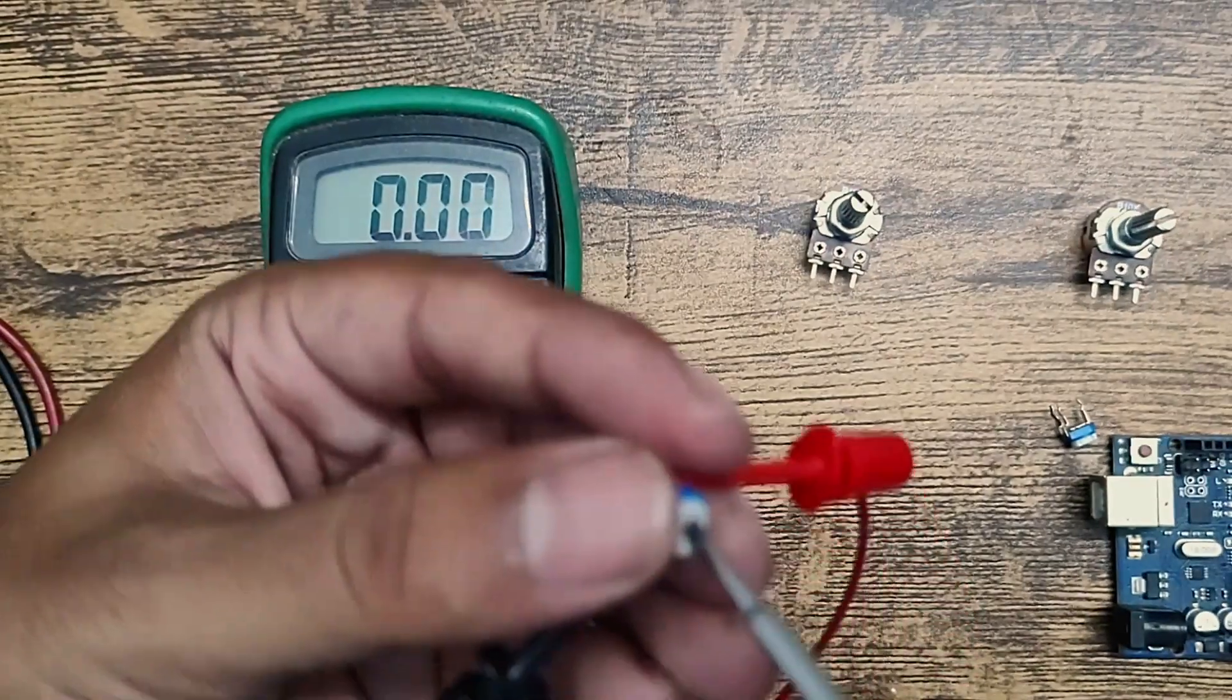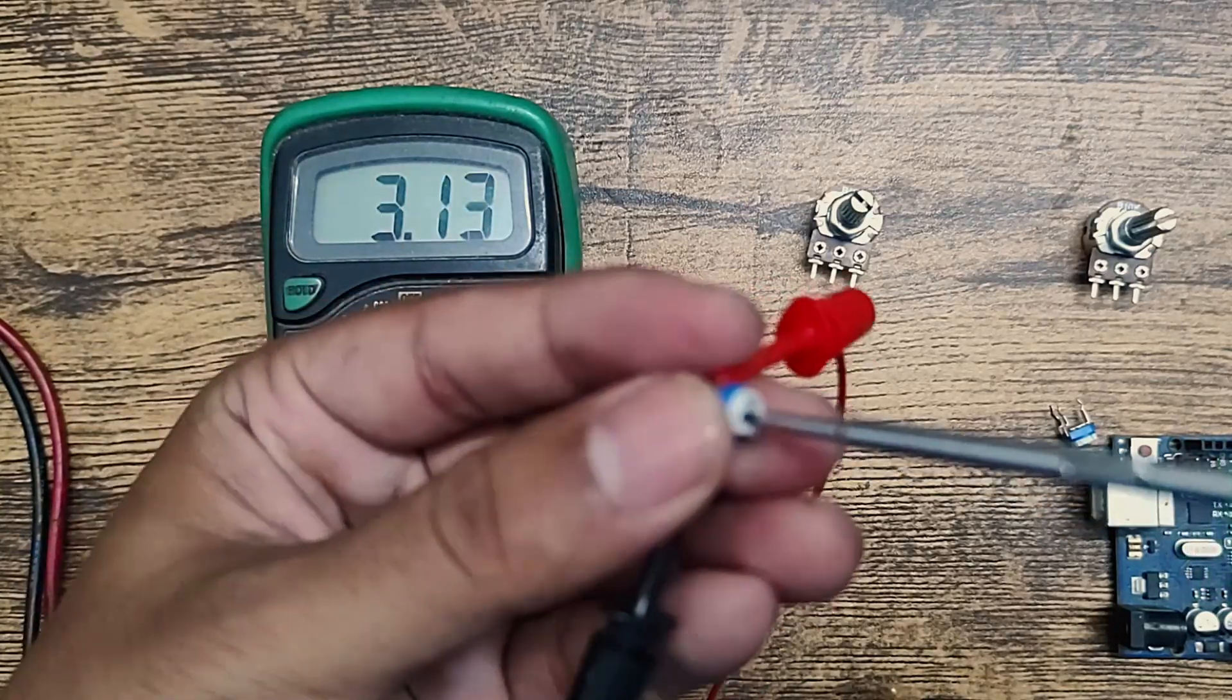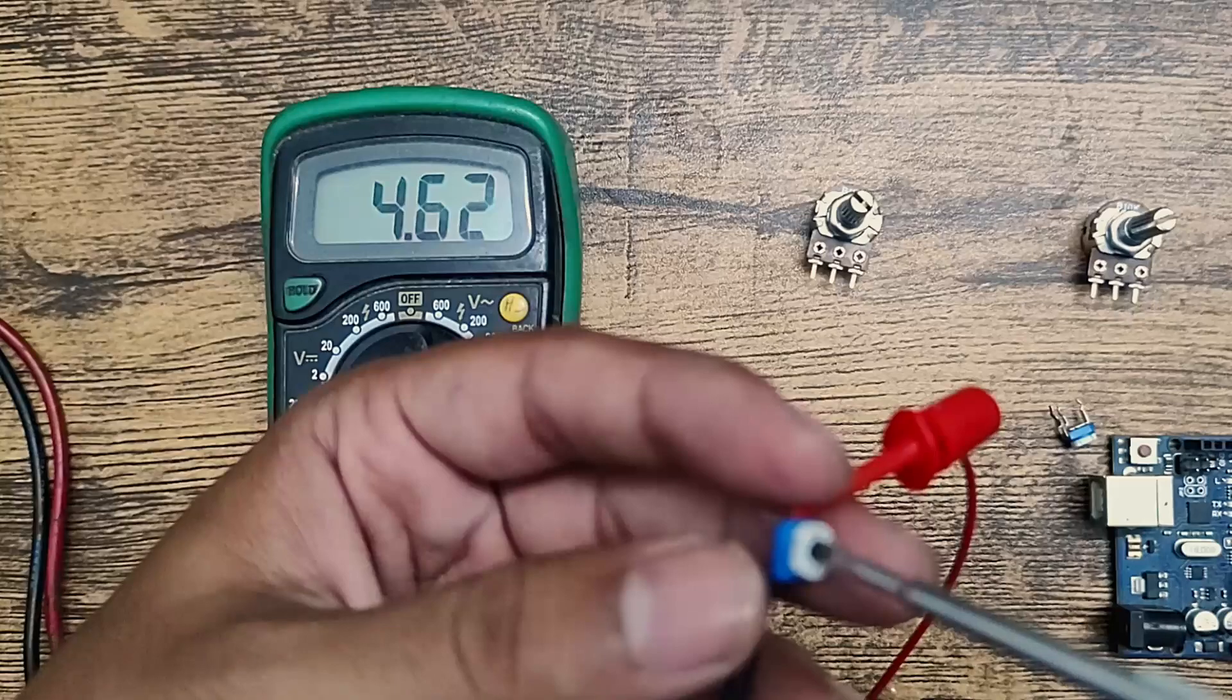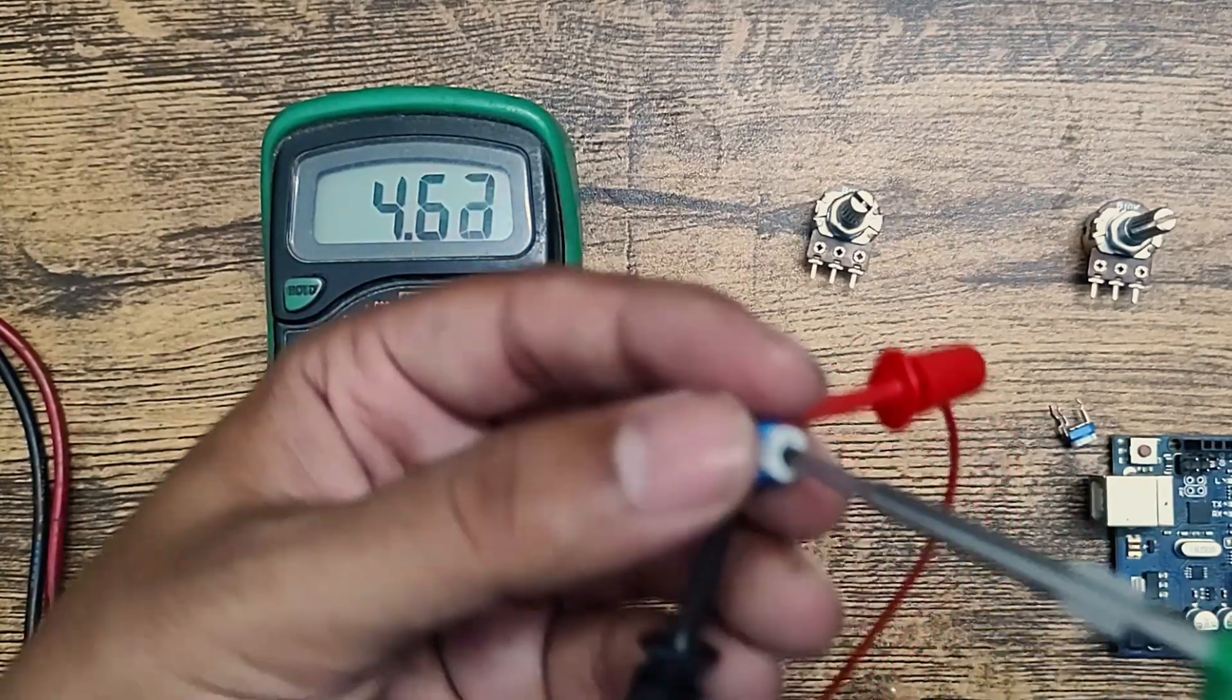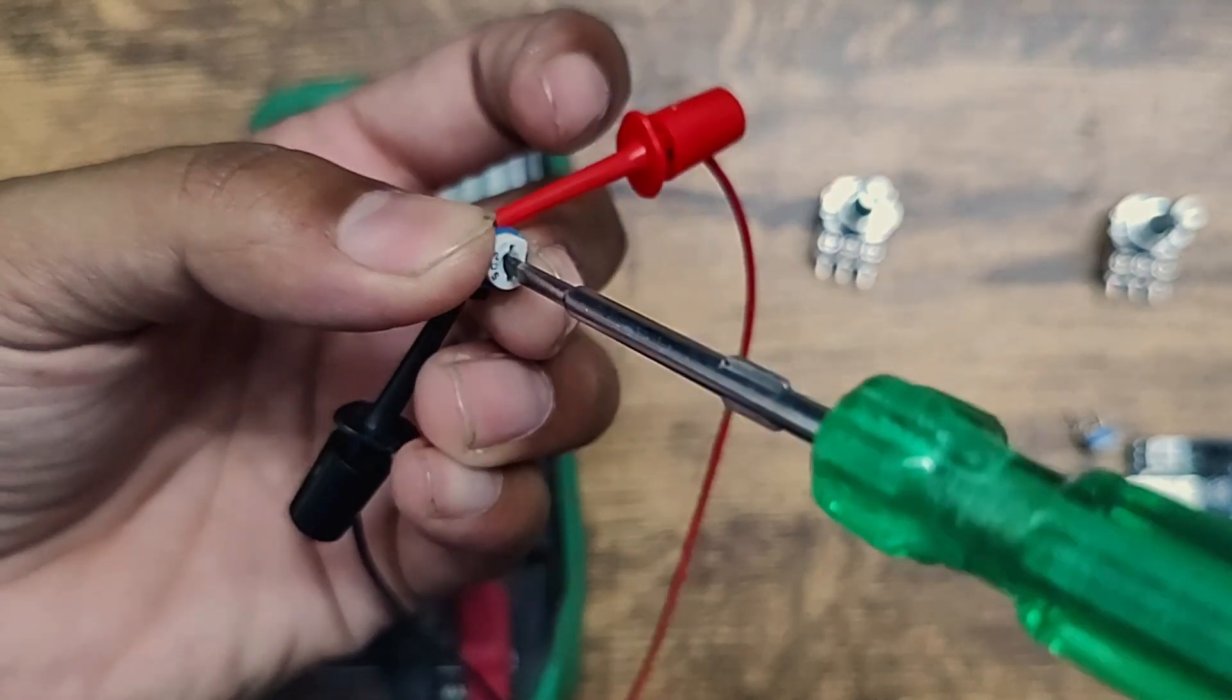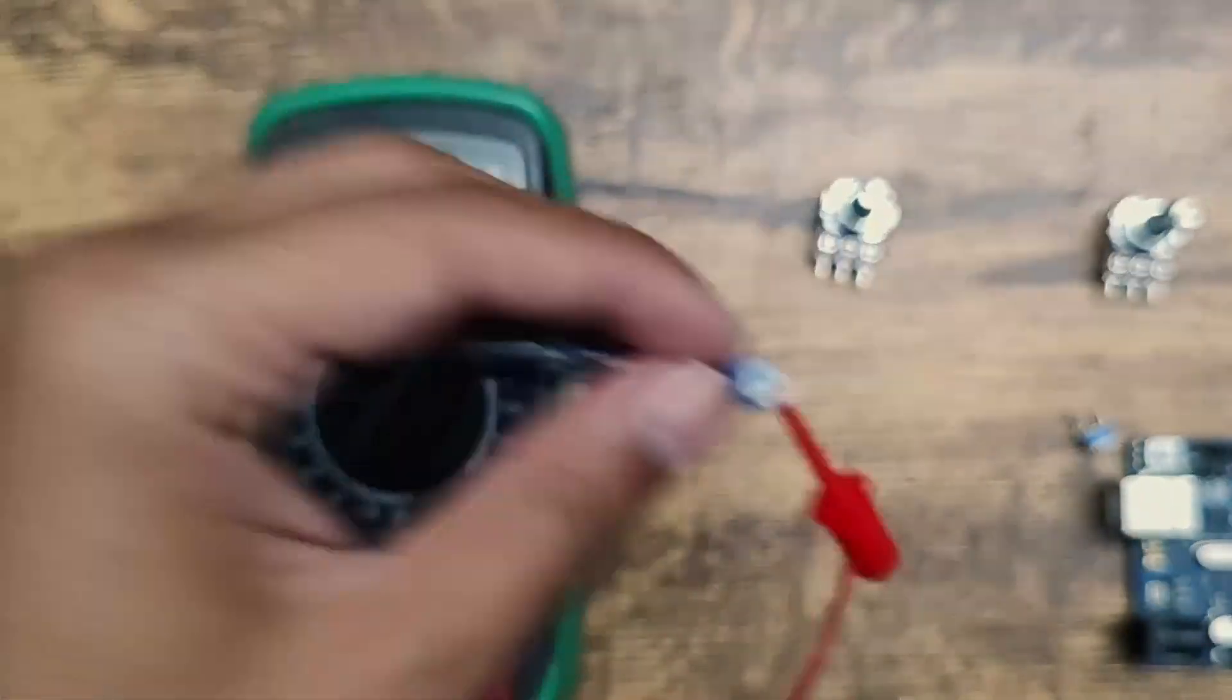So the value is zero and turning it to the clockwise, and the value is getting increased. So it is now full and the maximum value of this potentiometer is 4.62. So we have this small one. I am turning it anti-clockwise to set the value to zero.